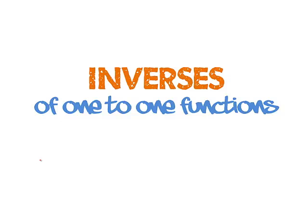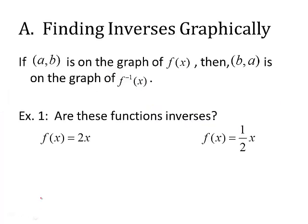We're talking about inverses of one-to-one functions. Finding inverses graphically: if a point (a, b) is on the graph of f(x), then (b, a) is on the graph of its inverse, f⁻¹(x). Notice what happened — my x and my y flipped places. That's what's happening here graphically.